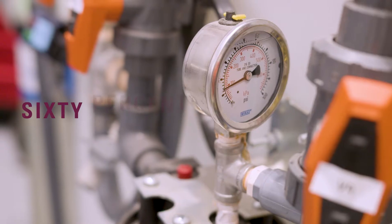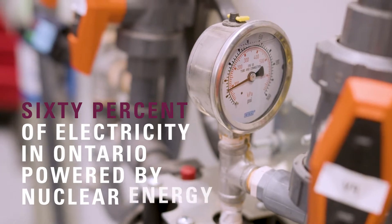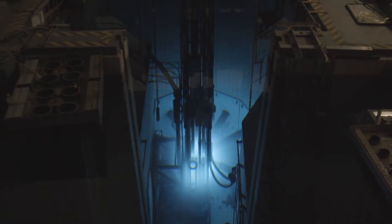Here in Ontario, 60% of the electricity that we use comes from nuclear energy, which has helped to make Ontario's power grid one of the cleanest in the world.